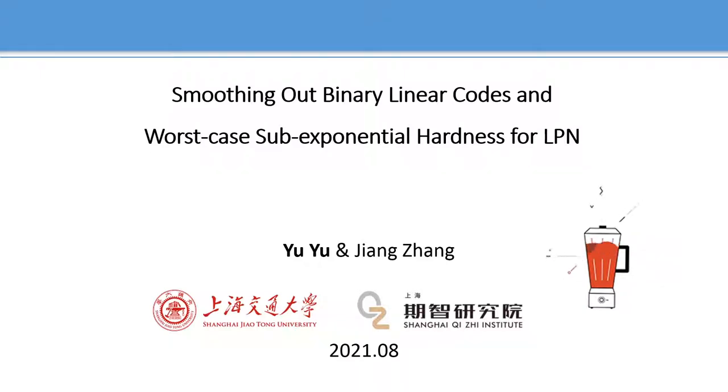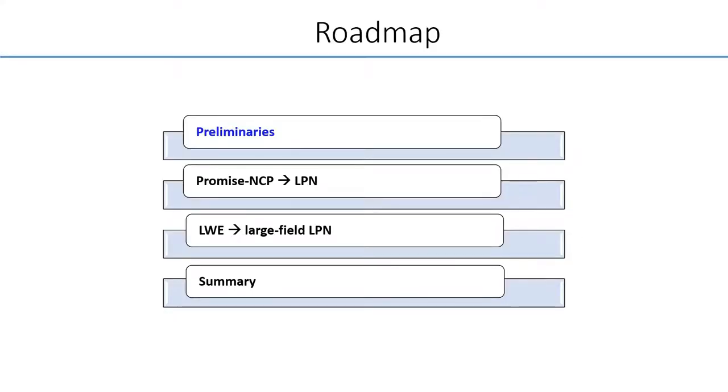At the core of this work is Worst-Case to Average Case Reduction for LPN, which is in turn based on smoothing lemma for binary linear codes. This is the outline of this talk. We will start with the preliminaries.